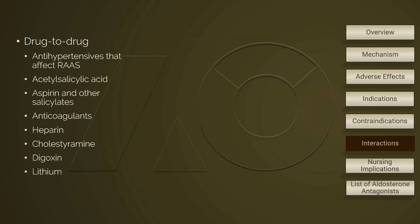Several groups of medications can interact with aldosterone antagonists. Antihypertensives that work on RAS can increase adverse effects; ACE inhibitors and ARBs can increase risks of hyperkalemia and hypotension. Acetylsalicylic acid, aspirin, and other salicylates may decrease the therapeutic effects of spironolactone. Spironolactone can decrease anticoagulant effects when used together with an anticoagulant. Low molecular weight heparin puts the client at risk for hyperkalemia, and cholestyramine puts the client at risk for both hyperkalemia and metabolic acidosis. Spironolactone can affect the renal clearance of digoxin and lithium, leading to toxicity.